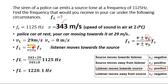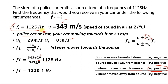So: (343 + 29) divided by (343 + 0) — the police vehicle is at rest so VS equals 0 — multiplied by FS which is 1125 Hertz. Substituting all values and solving, we get 1120.1 Hertz. This is the frequency we will receive in our car.